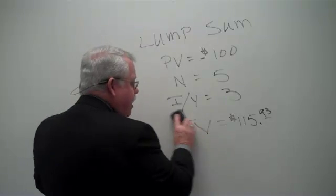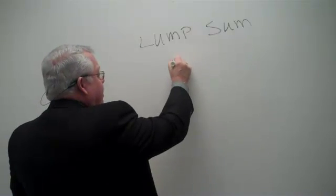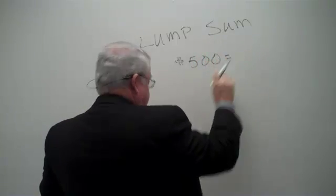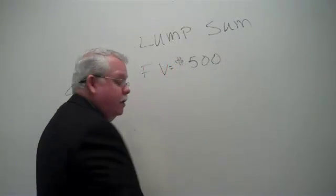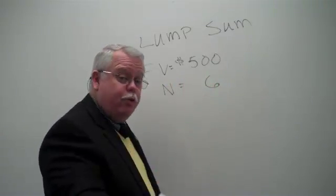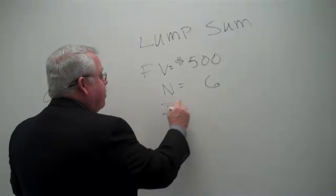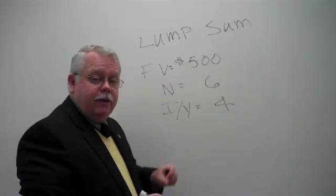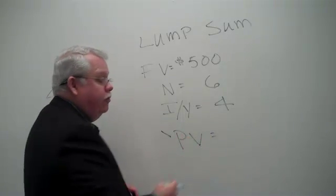What I want to do next is turn this around. Let's take a different example and say you're going to get $500 in the future. So the future value is $500. Given that you're going to have to wait six years before you receive it, and given that the money could be earning an interest rate of 4 percent per year, what is that $500 worth today? What is the present value?